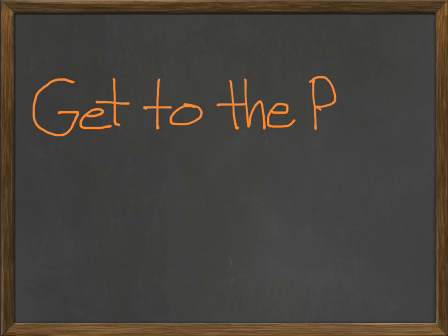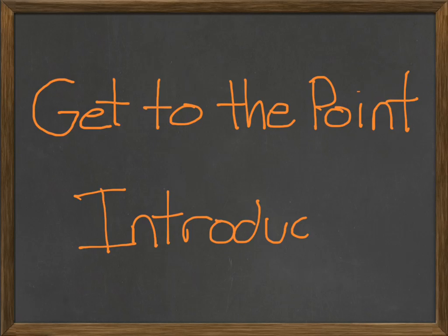Let me help you out with a model I call get-to-the-point introductions. The basic idea is to distill introductory paragraphs and sections to their three main parts. Once you've done this, you need only to flesh it out according to the needs of your paper. First, I'll break the three parts down in sequential order. Then we can talk about putting them together.